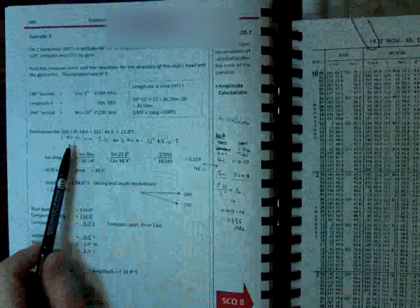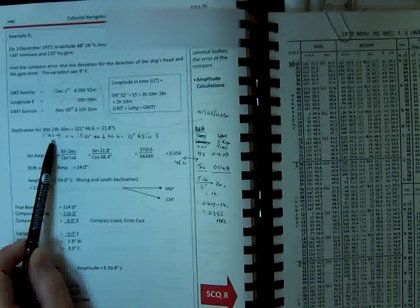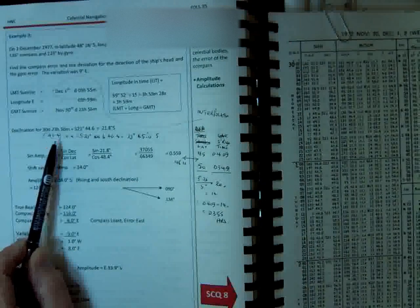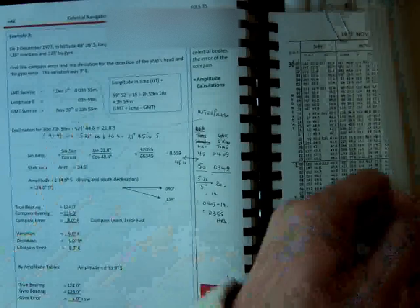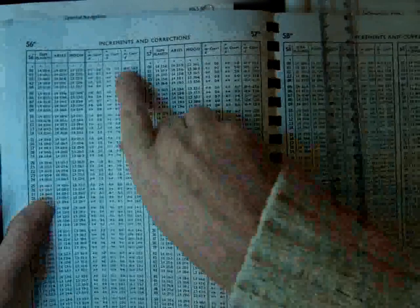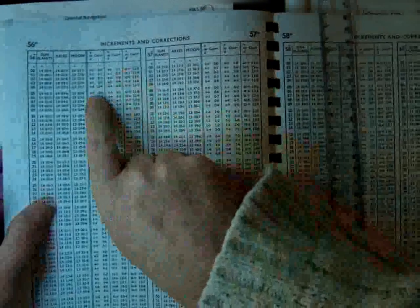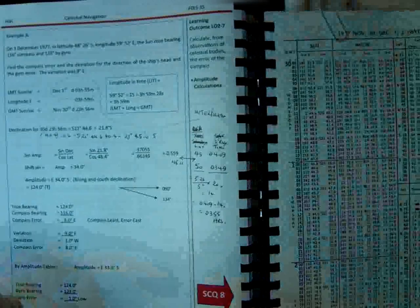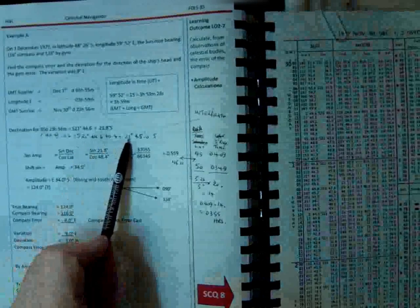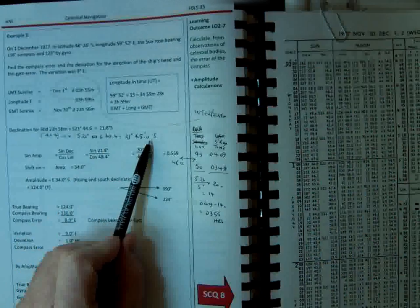Now I know in the example they haven't used this, but I think you should always apply the correction. So that's 0.4, and we would go in at 56 minutes with 0.4, and we'd find we need to apply 0.4. So in fact, our true declination is 21 degrees 45 minutes south.